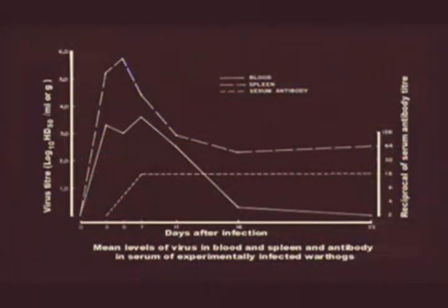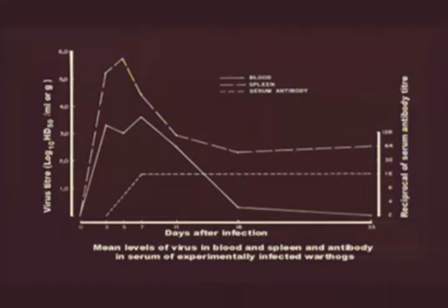During the acute stage of infection with ASF virus in warthogs, which lasts about a week, viremia sufficient to infect ticks feeding on them may occur. Thereafter, viremias are below the threshold of infection for ticks. This implies that, generally, ticks only acquire infection from warthogs over a period of a month or two during the time when young warthogs are present in the burrows.